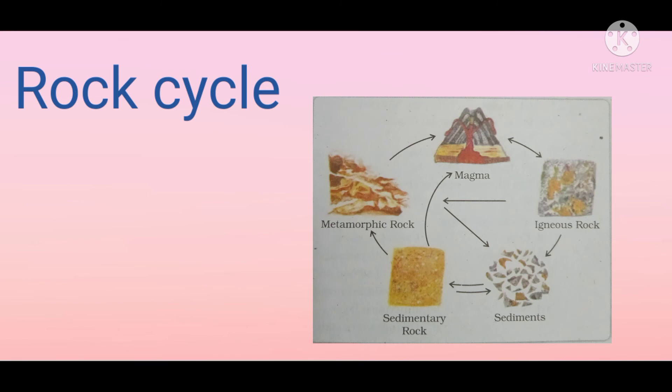Now you understand the different types of rocks and how they are formed. Rocks can change through a process called the rock cycle. The process of transformation of one rock into another is known as the rock cycle. Igneous rocks are formed from magma, and they can change into sediments. But igneous rocks can also change directly into metamorphic rocks if subjected to great pressure.